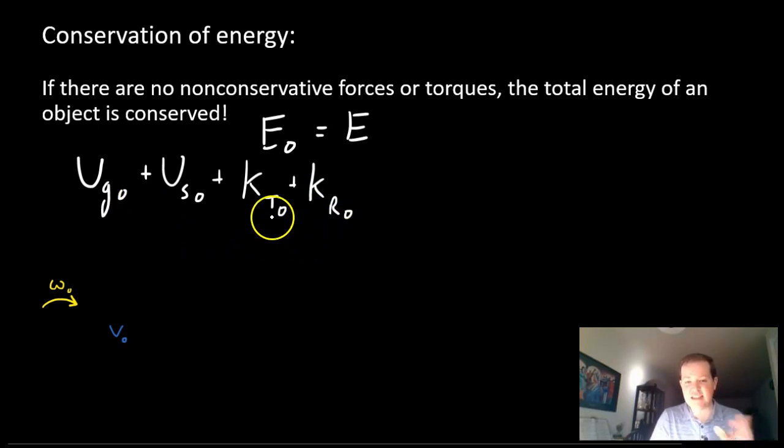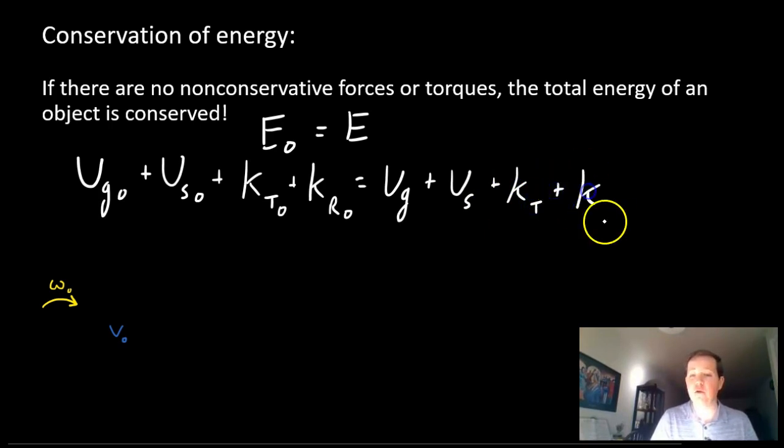I have all these nots, these zeros, because that's the energy in the beginning. And we can compare that to the energy at some later point. As long as there's no non-conservative forces or non-conservative torques, that total energy must remain the same. So some final gravitational potential, plus some final spring energy, plus some final translational kinetic energy, plus some final rotation. Remember, one of these in particular could change. UG not could be different from UG, but the total amount of energy needs to stay conserved.